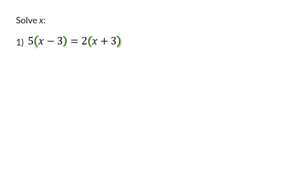So on the left hand side, I'm going to start by multiplying in the 5 to each term inside that bracket. 5 times x is 5x and 5 times minus 3 is minus 15. The same thing happens on the right hand side where the 2 needs to be multiplied with every term in the bracket, and that will give me 2x plus 6.